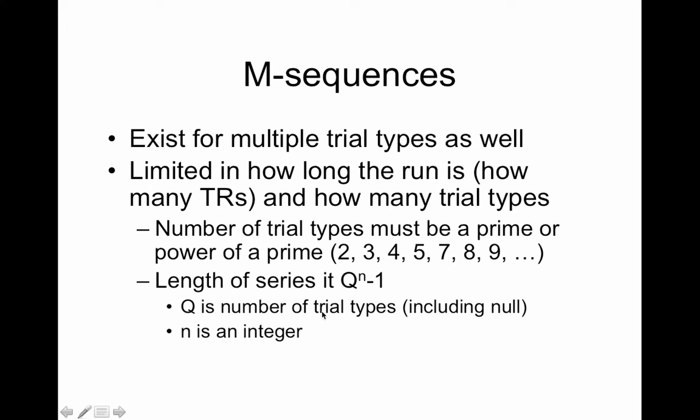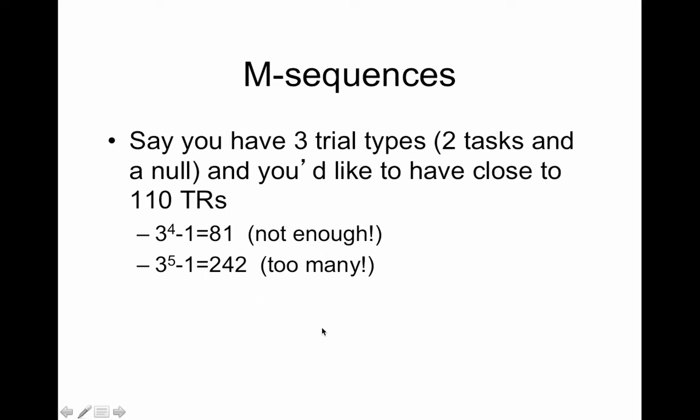Now the length of the series has to be Q to the n minus one where Q is the number of trial types including null trials or fixation, whatever you're using as your kind of baseline stimulus, and n is an integer.